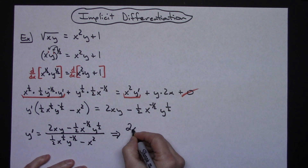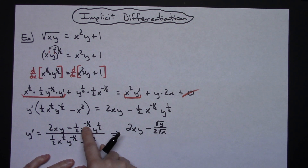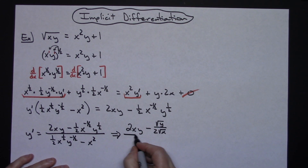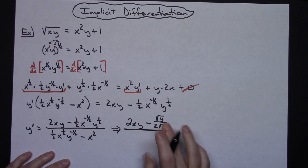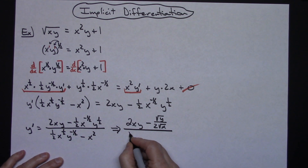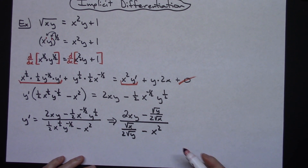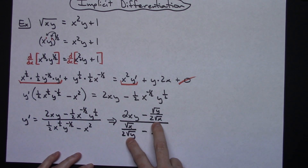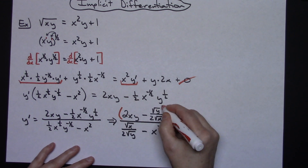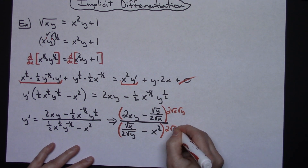So that gives us 2xy minus square root of y over 2 square root of x — I moved the negative exponent to the bottom, made it positive, and turned them into square roots. On the denominator, the y to the negative 1 half goes to the bottom, giving us square root of x over 2 square root of y, minus x squared. Yes, this forces a complex fraction, but that's okay. I'm going to multiply through by the least common denominator, which is 2 square root of x times square root of y.